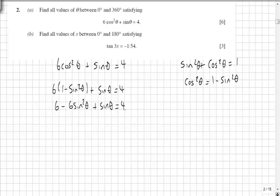And then taking everything up to the right hand side, rearranging, we should get 6 sin squared theta minus sin theta minus 2 equals 0.